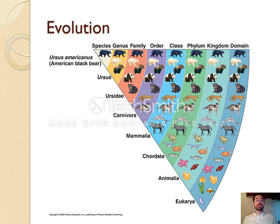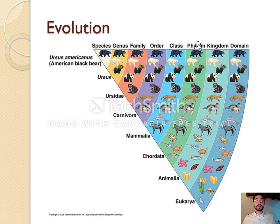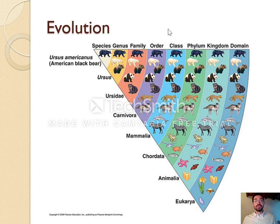Each level gets more and more specific. A domain might include all eukaryotes — protists, fungi, plants, and animals. A kingdom would be something like animals — heterotrophs without cell walls but with lysosomes. Then you get into phyla, then class (such as mammals), then order, family, genus, and finally species. For example, Ursus americanus, the American black bear, is a species because all members can successfully interbreed to produce fertile offspring. All members of a species share the same genus, family, order, class, phylum, kingdom, and domain.